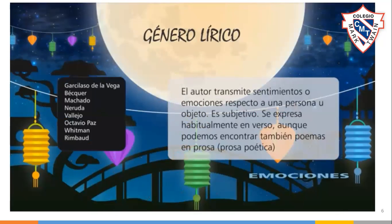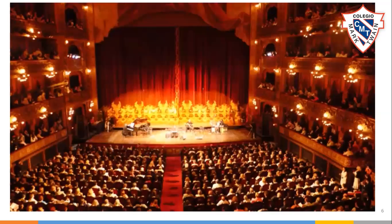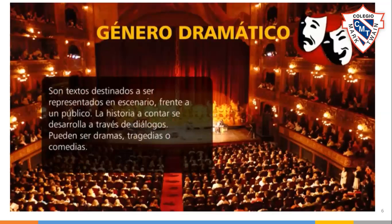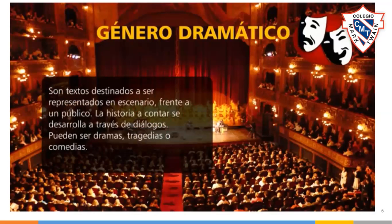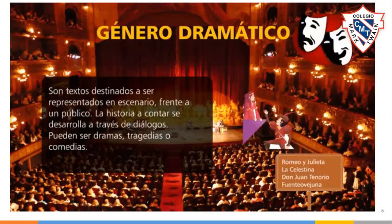Las obras dramáticas son textos destinados a ser representados en escenario frente a un público. La historia a contar se desarrolla a través de diálogos. Pueden clasificarse en dramas, tragedias o comedias. Aunque la palabra como arte está presente en este género, su realización total se realiza en el escenario. Obras como Romeo y Julieta de Shakespeare, La Celestina de Fernando de Rojas, Don Juan Tenorio de José Zorrilla o Fuente Ovejuna de Lope de Vega son algunas obras representativas.